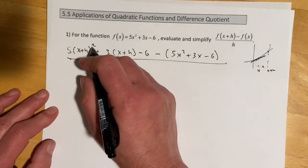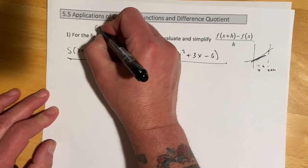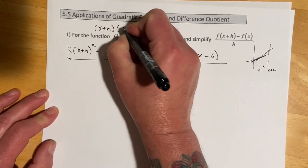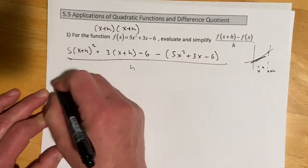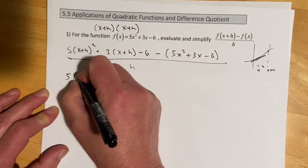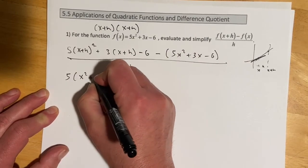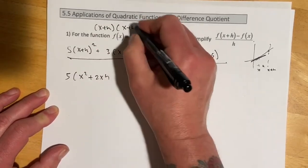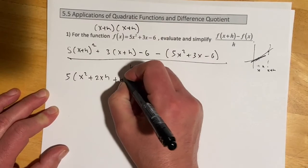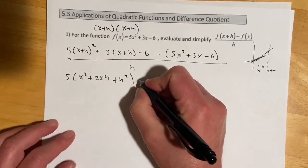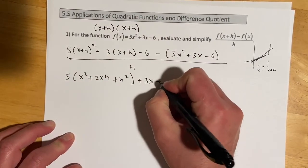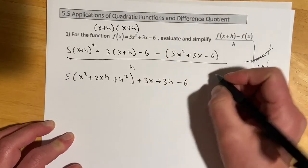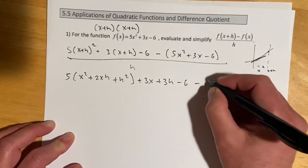So once I'm here, let's go ahead and expand this out. Remember this x plus h squared is really x plus h, x plus h. So you're going to do a foil there. And that's going to come out 5. And then x squared plus 2xh, when you do the inside and the outside, plus the h squared. Here we're going to have plus 3x plus 3h minus 6.